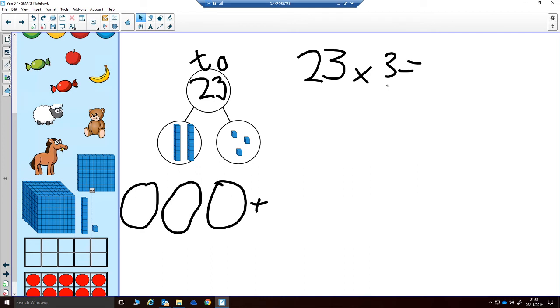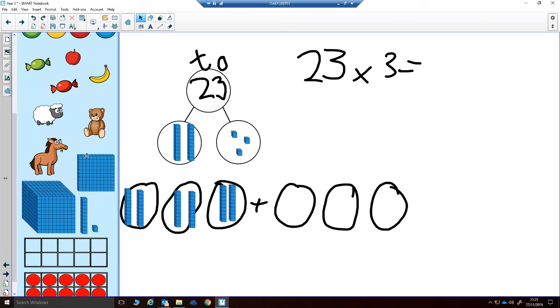I'm also going to add that to three groups for the ones. So multiplying by 3, I need three groups with the tens and three groups for the ones. Let's put in two tens into each box. Let's count: 10, 20, 30, 40, 50, 60. So actually in the tens section I have 60.